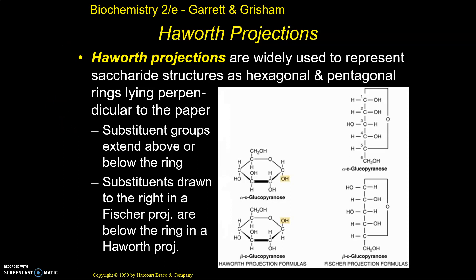So let's pick up with Haworth projections — because you've seen them now, how do we draw them and how do they relate to Fisher projections? We use Haworth projections because they represent that these things are cyclic and actually make it look like a ring. The linear Fisher projection does not look like a ring structure, when in fact it is. The Haworth is a better representation, but you need to know how this relates to that.